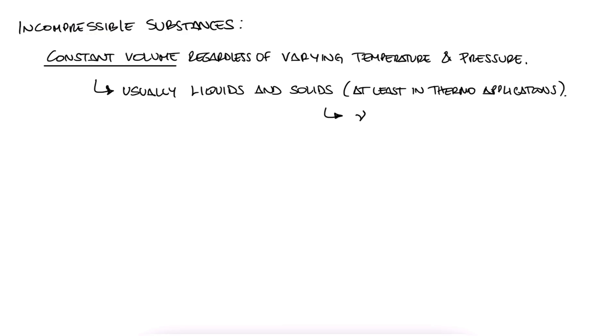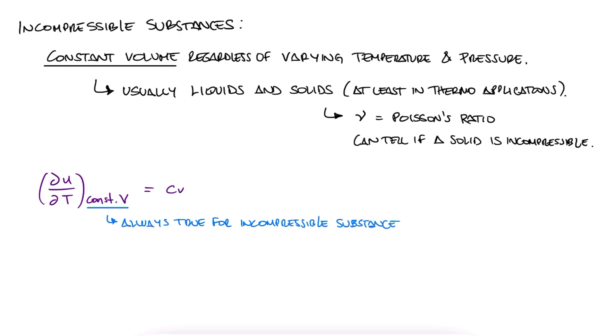Of course, for solids we have properties for that, like Poisson's ratio, but not the point here. Since we defined partial u with respect to t for constant volume as cv, and since the volume of an incompressible substance never changes during a process, we can always use this definition for liquids and solids and even write it as du/dt equal to cv.